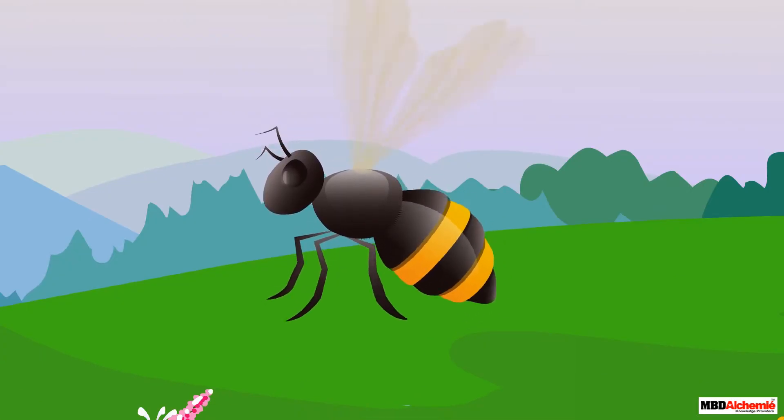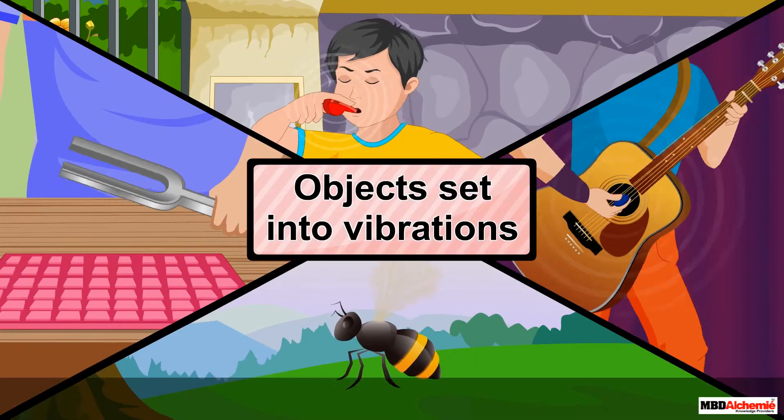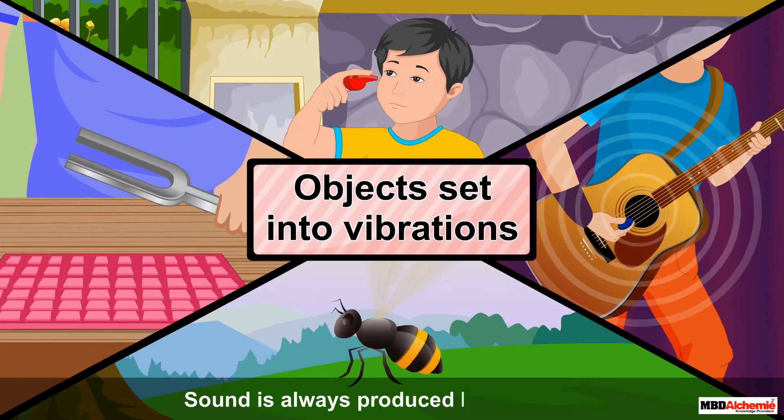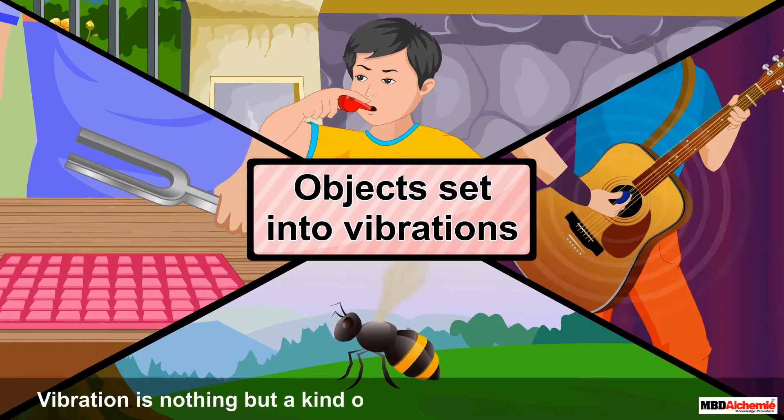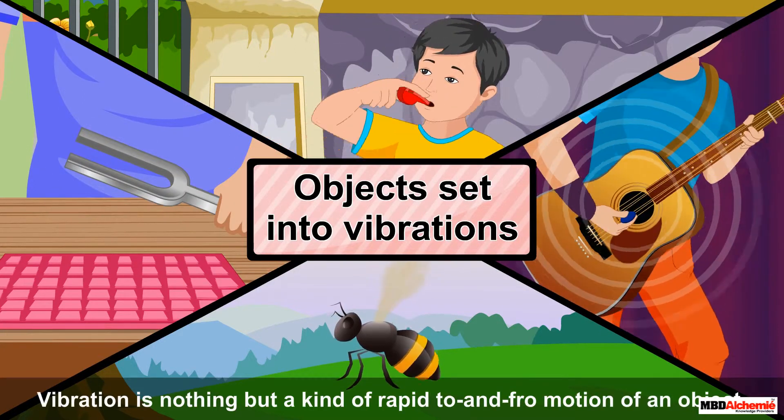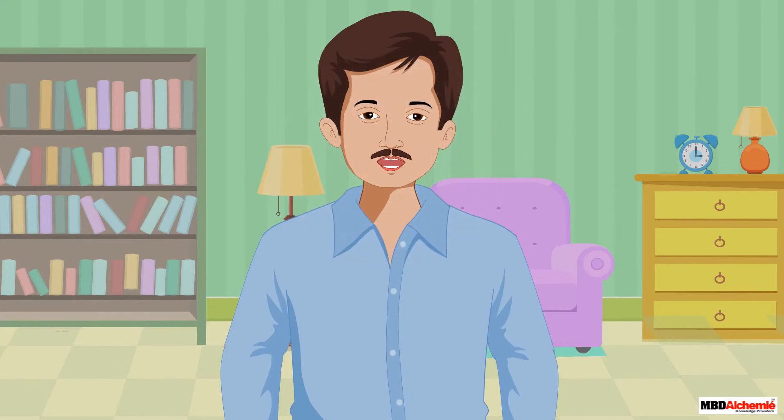Thus, sound is always produced by vibrations. Vibration is nothing but a kind of rapid to-and-fro motion of an object. Even when we speak, the sound is produced due to vibrations in our vocal cords.